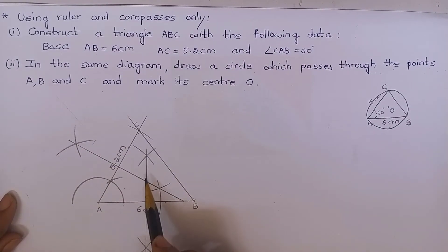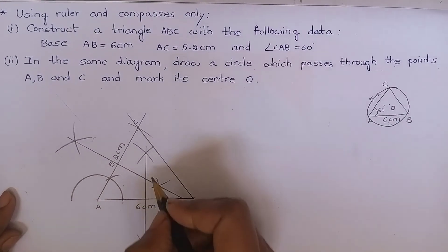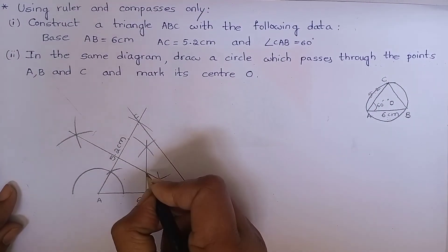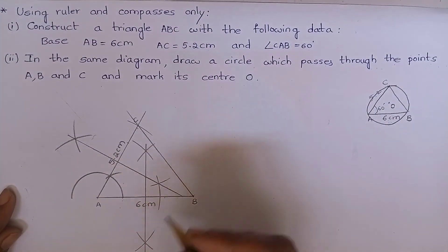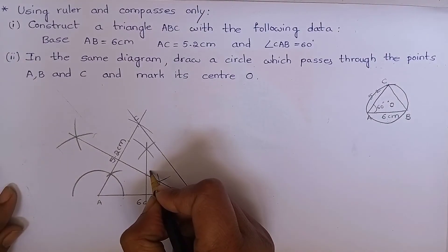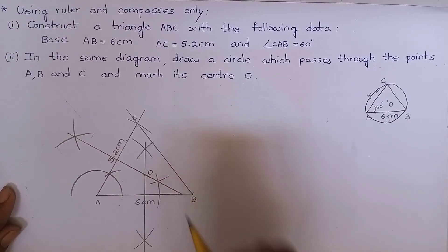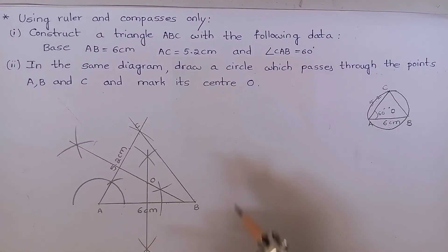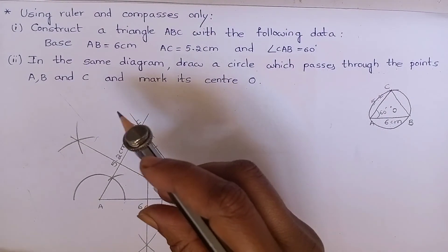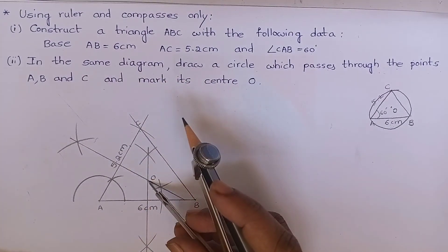These two perpendicular bisectors meet at this point. And it is the circumcenter of the circumcircle. And let me mark it as O. Now, keeping the compass at this point, draw a circle which touches A, B, C.